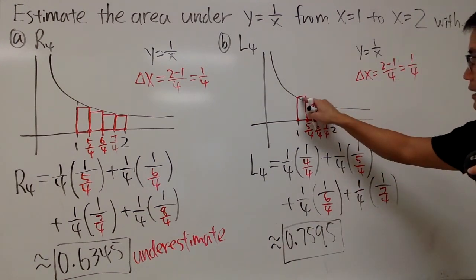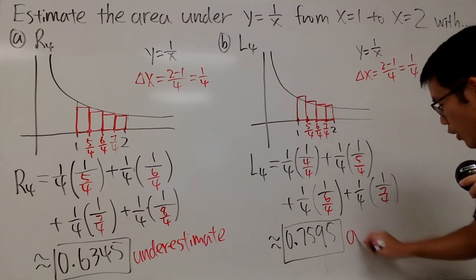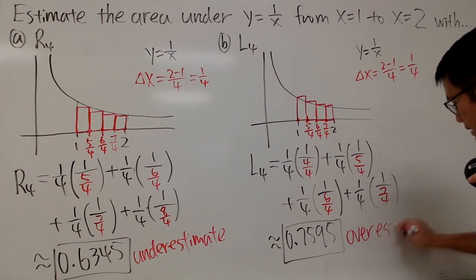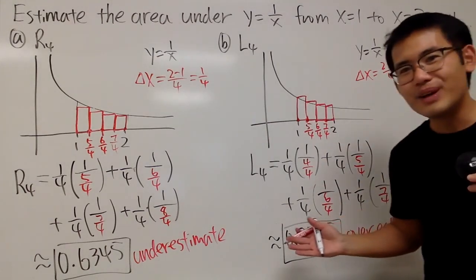as you can see, this, this, this, and that, they are all sticking out. So this number is actually overestimating the actual area. So that's it. That's how you do it.